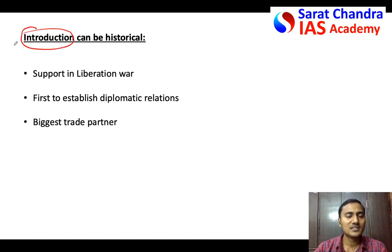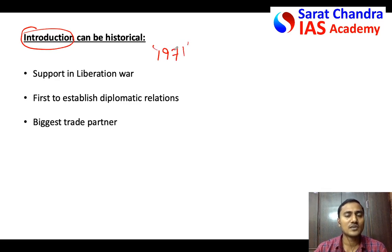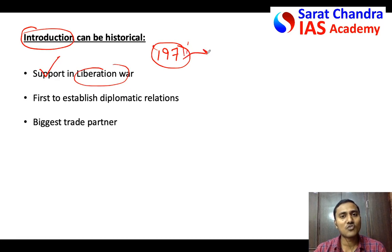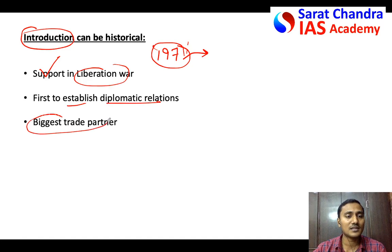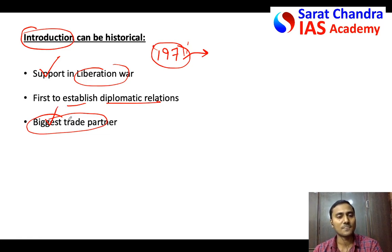I suggest that in this kind of question you start with an introduction written historically. For example, you can write about Bangladesh being formed in 1971 — that India supported Bangladesh in the 1971 liberation war, that India was one of the first countries to recognize Bangladesh and establish diplomatic relations, and that among all South Asian countries Bangladesh is India's biggest trading partner and vice versa. Write two to three lines of this kind of introduction.